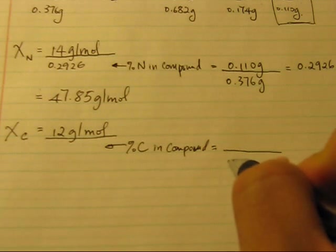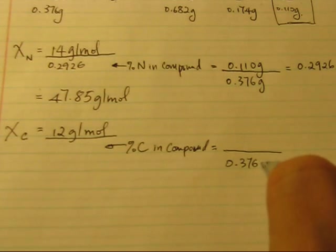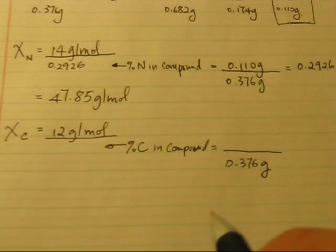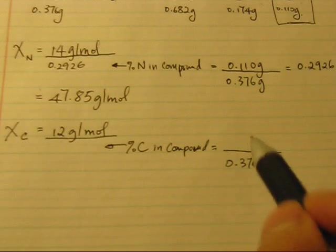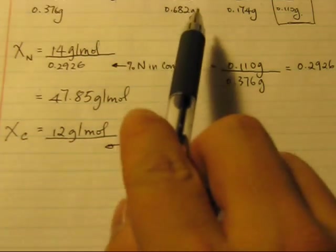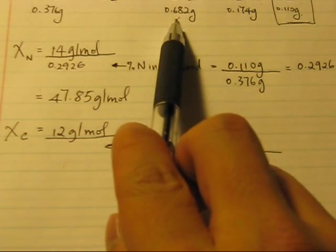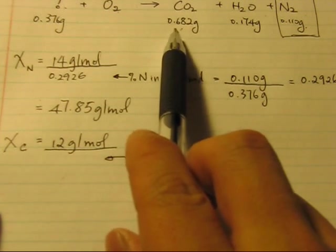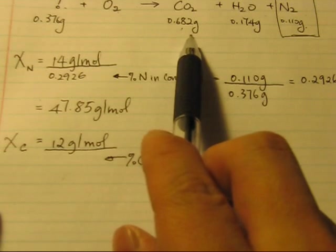Part over the whole, and we understand that the whole is the 0.376 gram. Now we do not have this number, because you can see here that we have 0.682 grams of CO2.